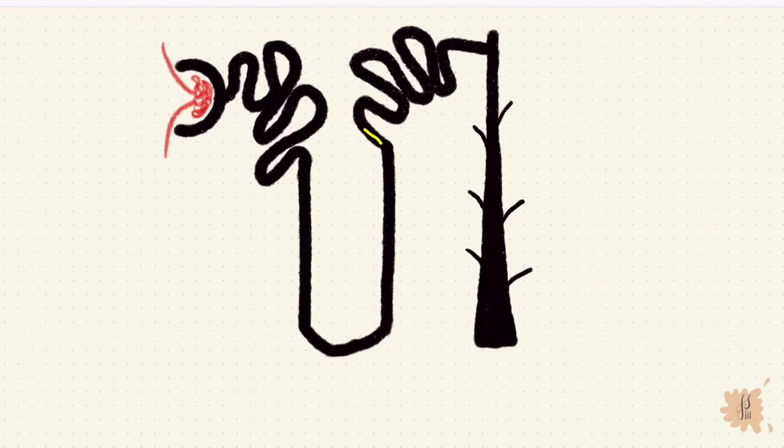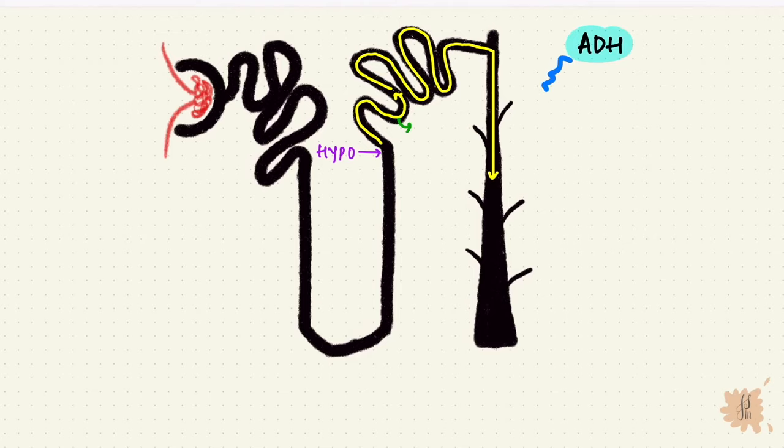But what happens in the DCT and the collecting duct? Since the fluid exiting the ascending limb has lost solutes, it's now dilute. It's hypoosmotic when it enters the DCT. The early DCT just adds to it. It reabsorbs sodium and chloride, but is impermeable to water. And then it reaches the late DCT and collecting duct. Now the antidiuretic hormone shows up. The ADH acts on the late DCT and collecting duct, increasing their permeability to water by creating water channels so that water can be reabsorbed and the urine can be concentrated. Without ADH, the dilute urine is just going to keep getting more dilute. But with ADH, there's water reabsorption and urine concentration.